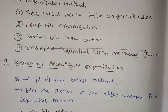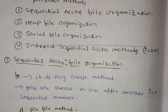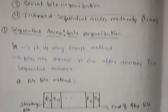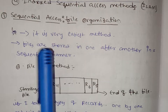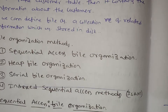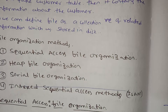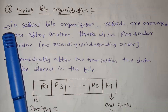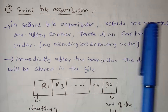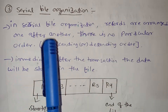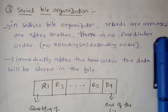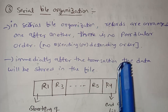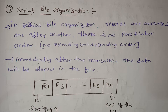In serial file organization, records are arranged one after another. There is no particular order — no ascending order, no descending order. This is serial file organization.